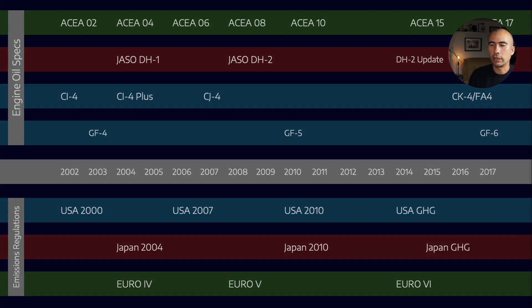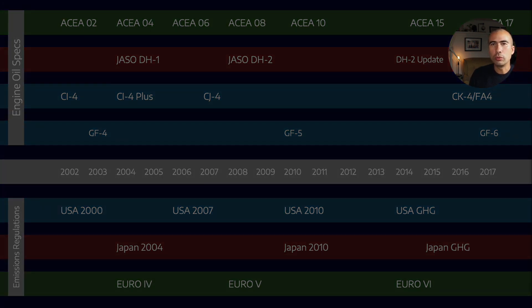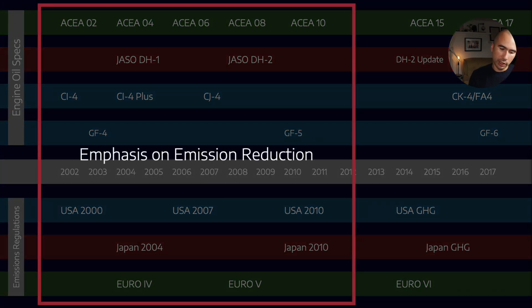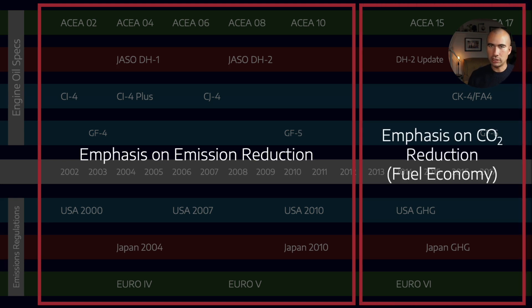Now, if we look at these regulations, there are two broad categories, where initially we had an emphasis on emission reduction. And in recent years, we've had an emphasis on carbon dioxide reduction, that is to say, improvements in fuel economy. But in that early 2000 to 2012 period, the technologies which enabled emissions reductions is what we're going to be talking about in this video.